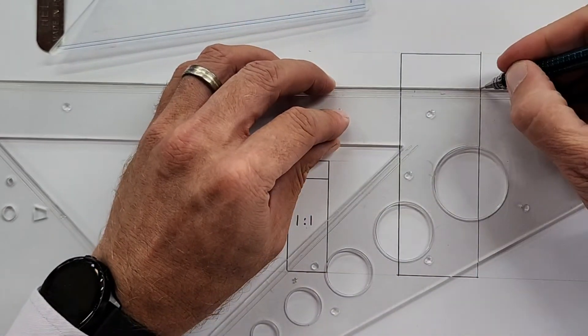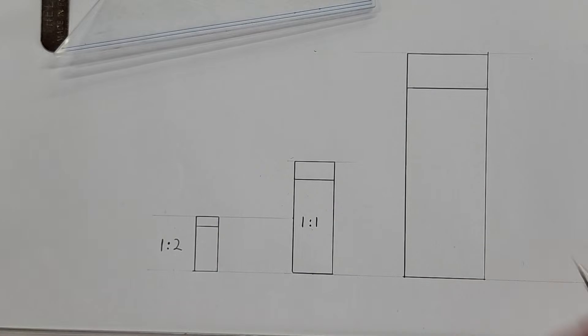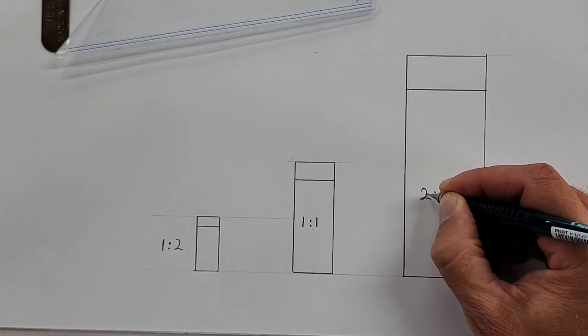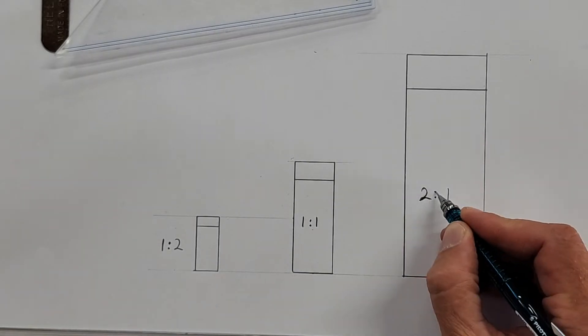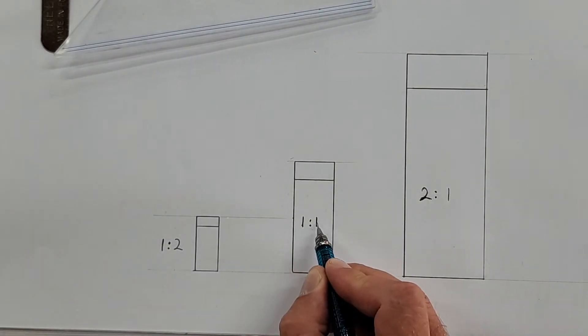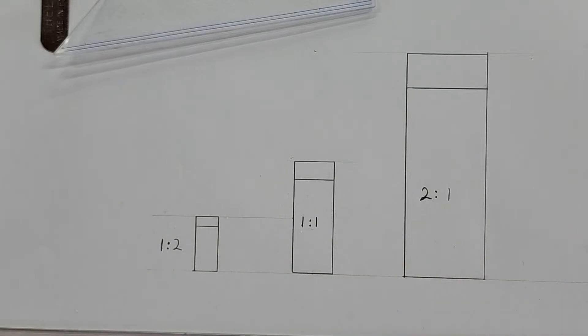And the width that was 24 becomes 48. And so it's going to look something like this. All right, this scale is 2:1, meaning it is twice the size of the original. This drawing is exactly the same as the original. This scale, it's half the size of the original. Yes or no?